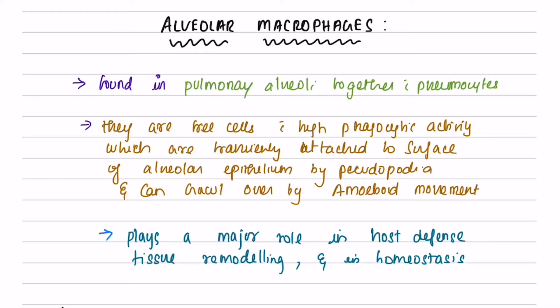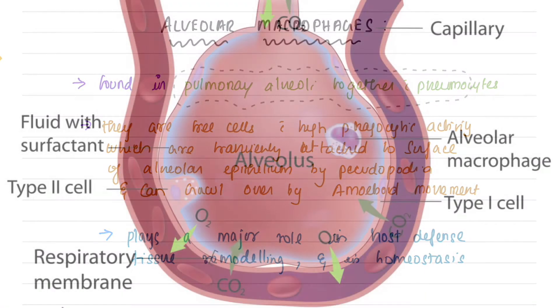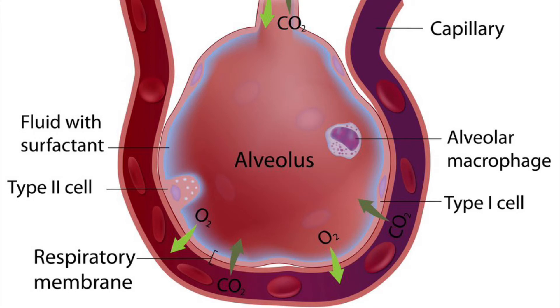Let's learn about alveolar macrophages today. Alveolar macrophages are the first line of defense against invading respiratory pathogens. They reside in pulmonary alveoli and the inter-alveolar septum in close proximity with the pneumocytes.